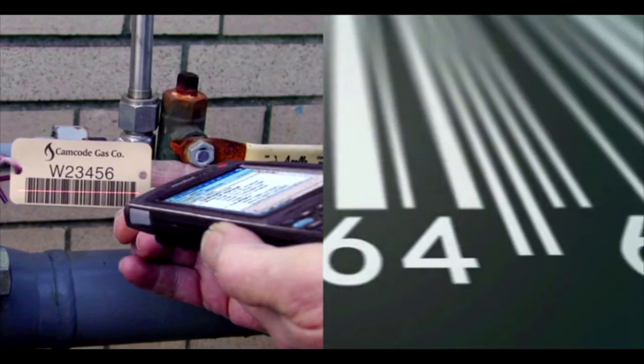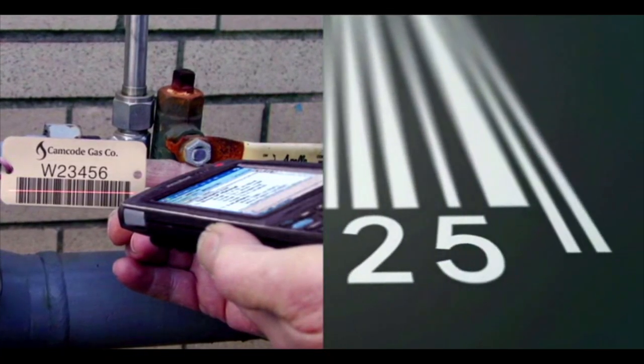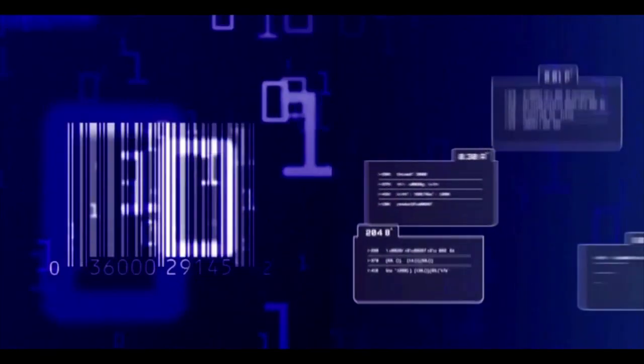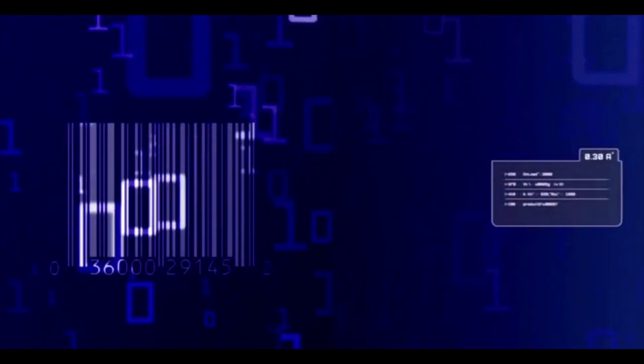MetalPhoto's variable information capability supports machine-scannable barcodes. Barcodes link products and other assets to networked computer systems, enabling tracking of item location, maintenance history, financial status, and countless other pieces of useful data.